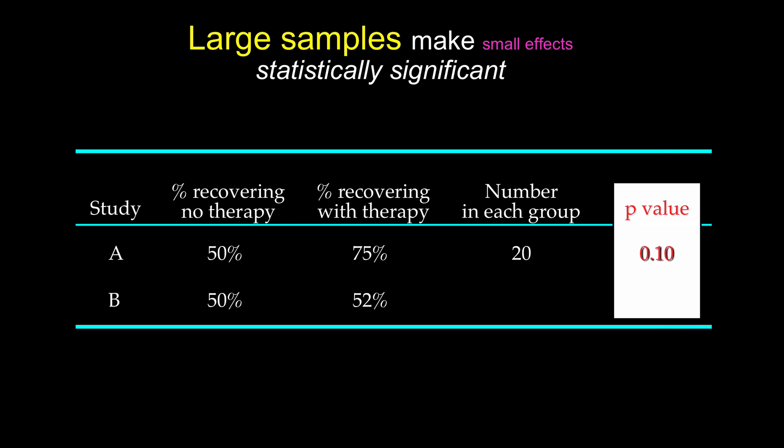Now in Study B, patients without therapy, 50% still recover. But in patients taking therapy, 52% recover. That's a small effect. But if there are 10,000 patients in each group, the p-value will be highly significant. It'll be 0.005. And yet that's not a very big effect, particularly if there are any side effects from therapy. So the lesson here is don't confuse statistical significance with clinical importance.